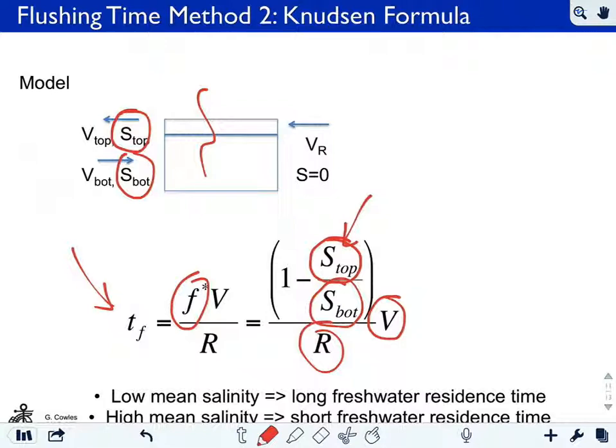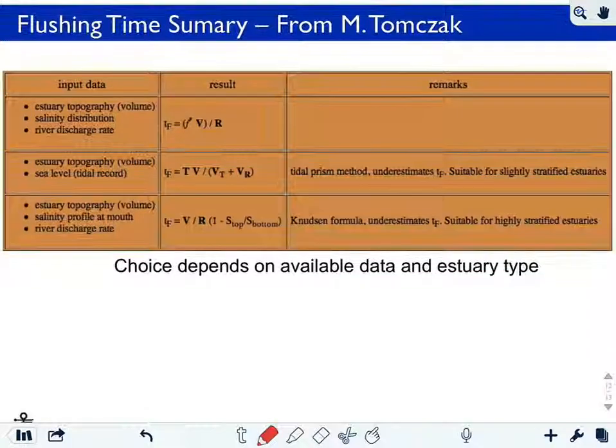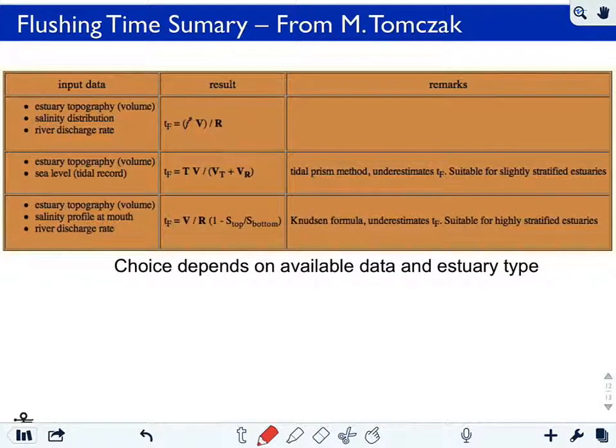The Matthias book goes into a bit more detail about this, and this is actually a slide from his book talking about this idea of when do you use these different formulas and what information do you need to get at them. This middle one here, the tidal prism method, you need to know the topography of the estuary, as I mentioned, bathymetry in order to get the volume.